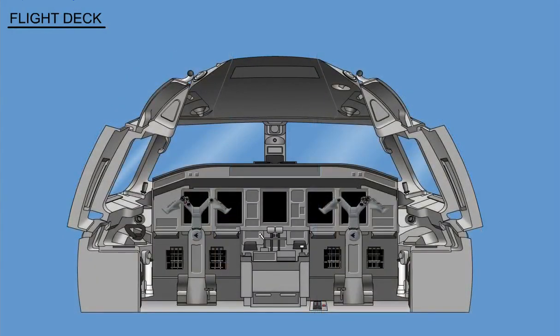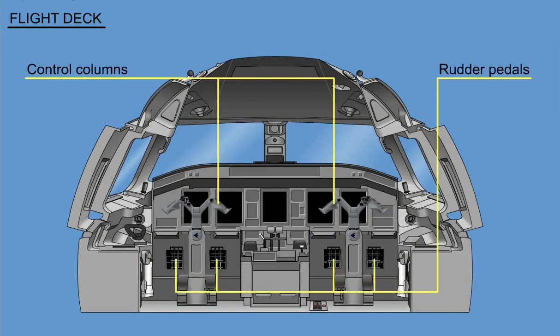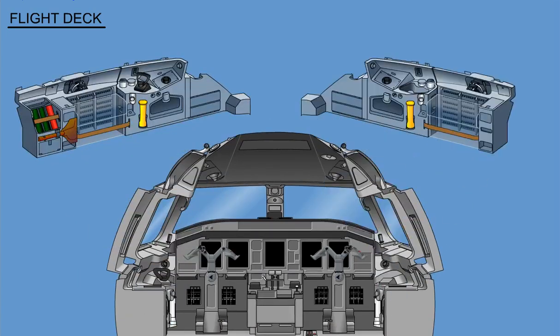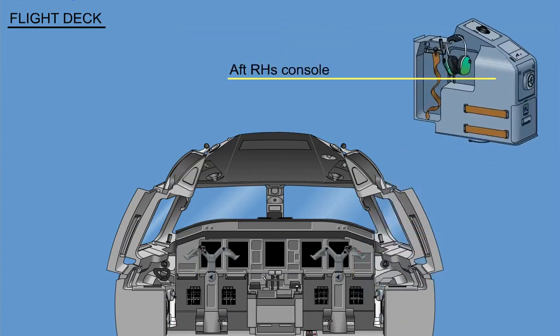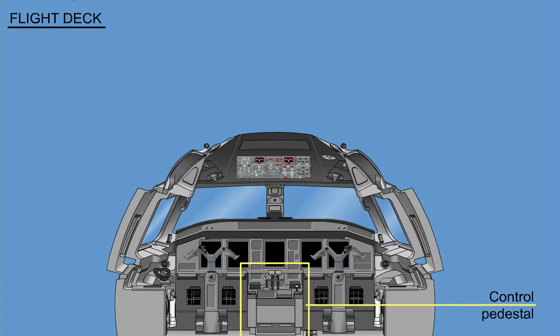The flight deck interior contains the control columns and rudder pedals, the pilot and co-pilot lateral consoles located beside each pilot seat, the aft right-hand side console, the control pedestal, and the overhead panel.